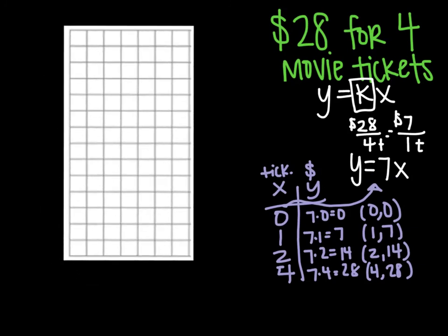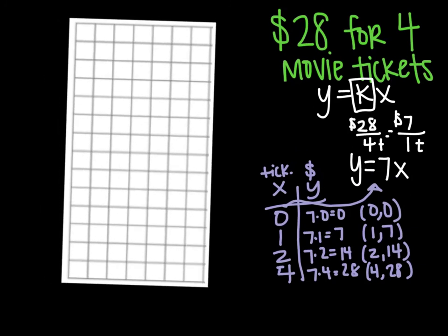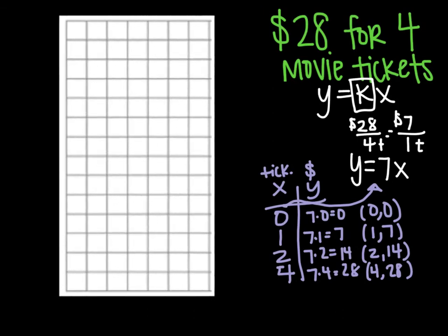So I'm going to use that to make a graph. We've already identified that x is your tickets and y is your money. And we're just going to pick 0, 1, 2, 3, 4, 5, 6.